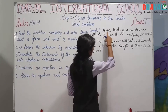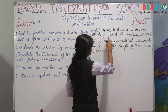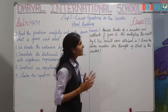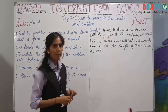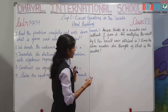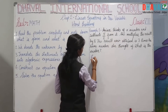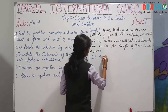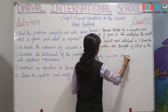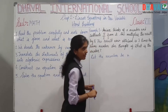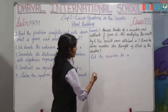Let's see the example: Amina thinks of a number and subtracts 5 upon 2 from it. Amina ने एक number के बारे में सोचा और उसमें से 5 upon 2 minus किया। तो सबसे पहले — let the number be x — उसने जो number सोचा उसको x दी।